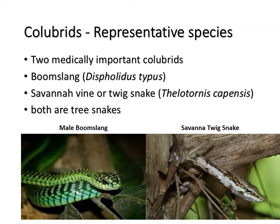The two species we have: the boomslang — this is a male boomslang, you can tell by the greenish-blackish color — and then this is your savanna twig snake. They're both tree snakes, but especially the boomslang does fairly well also on the ground. It actually gets down from the trees sometimes to hunt chameleons or whatever else on the ground before going back to the tree. But they are largely arboreal.